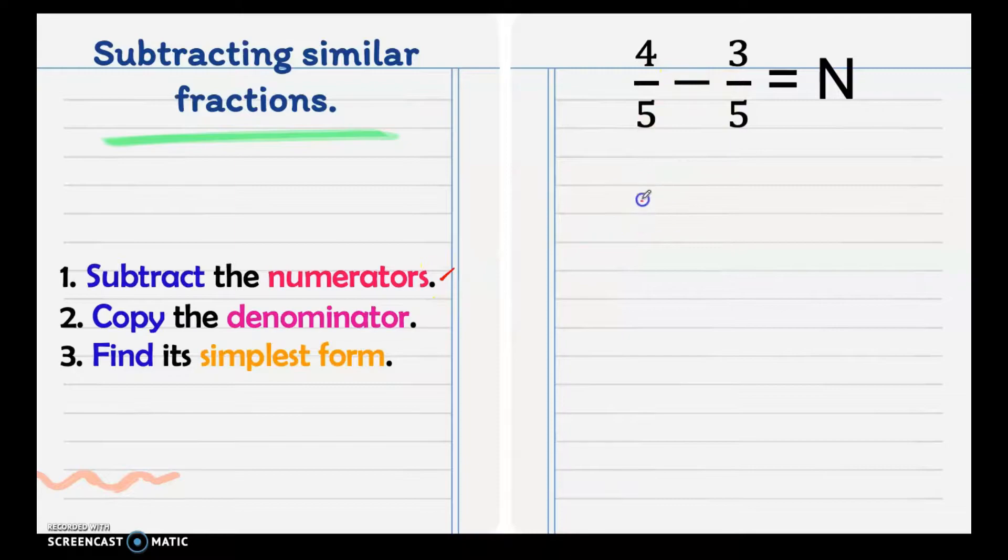We have 4 minus 3 is 1, then copy the denominator, we have 5. Then find its simplest form. Now 1 and 5 is already in simplest form since there is no other common factor aside from 1. Then this is our final answer.